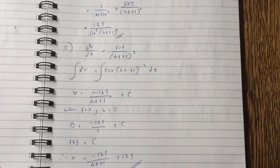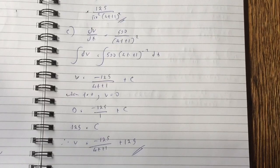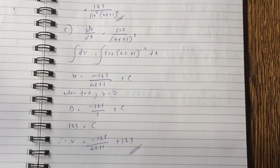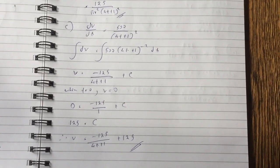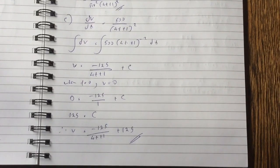Now, to find the volume, dv dt equals 500 over 4t plus 1 squared. So integral of dv equals to the integral of 500, 4t plus 1 to the minus 2 dt. The volume equals minus 125 over 4t plus 1 plus c.